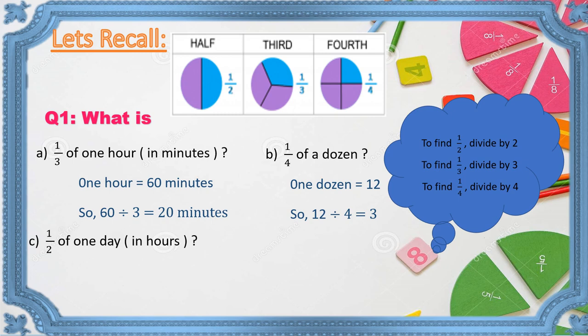Let's see another example. What is half of one day? The answer should be in hours. One day equals twenty-four hours. Since it is one half, we divide by two. So the answer is twelve hours.